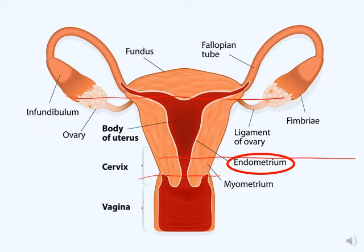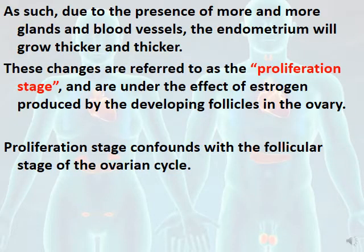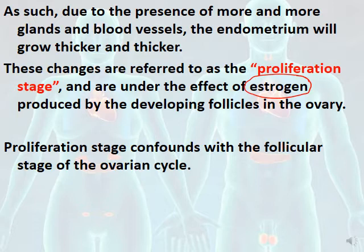The endometrium is the innermost lining of the uterus; the myometrium lies outside it. The cervix and vagina are also part of the female reproductive system. Sloughing of the endometrium causes the menstrual flow. As more glands and blood vessels develop, the endometrium grows thicker — these changes are referred to as the proliferative stage, which is under the effect of estrogen produced by the developing follicles in the ovary.